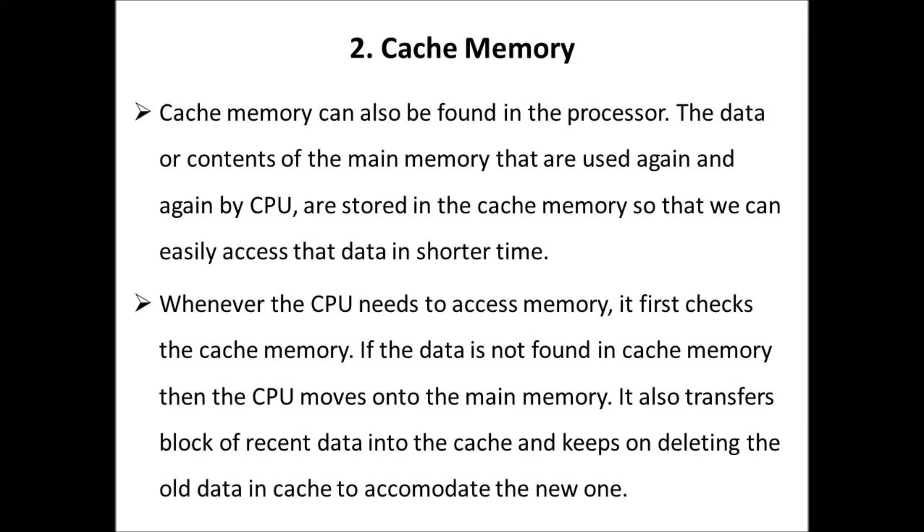Second one: cache memory. Cache memory can also be found in the processor. The data or contents of the main memory that are used again and again by the CPU are stored in the cache memory so that we can easily access that data in a shorter time. Whenever the CPU needs to access memory, it first checks the cache memory. If the data is not found in cache memory, then the CPU moves on to the main memory. It also transfers a block of recent data into the cache and keeps on deleting old data in cache to accommodate the new one.